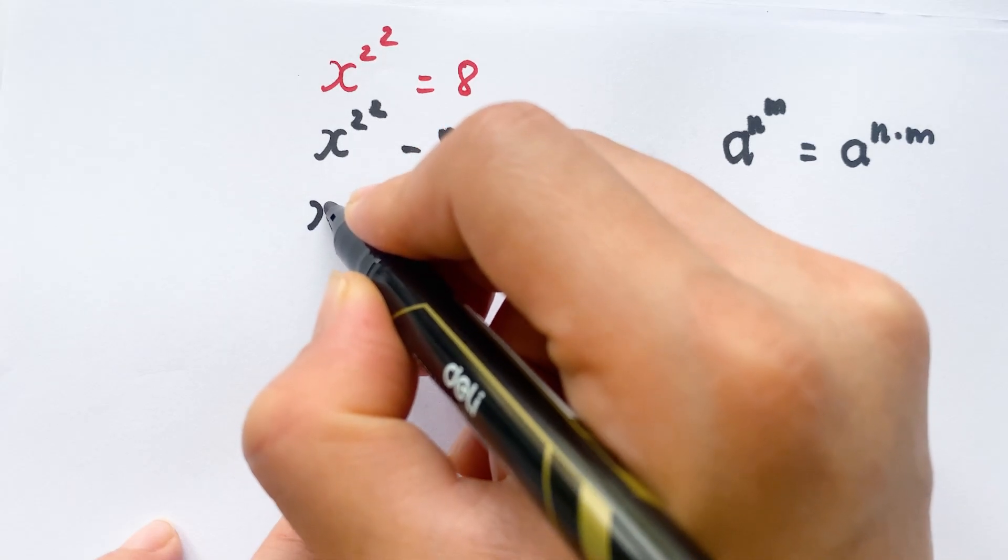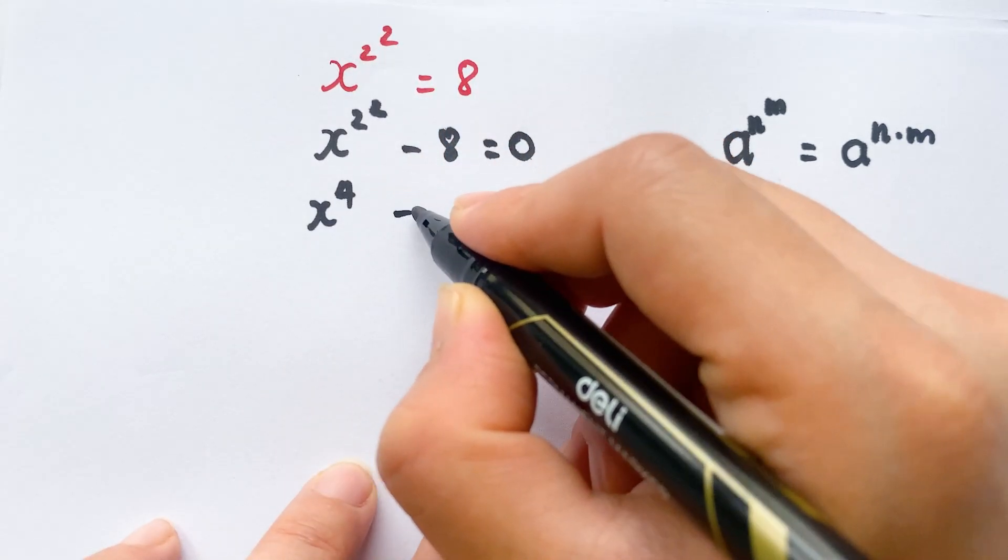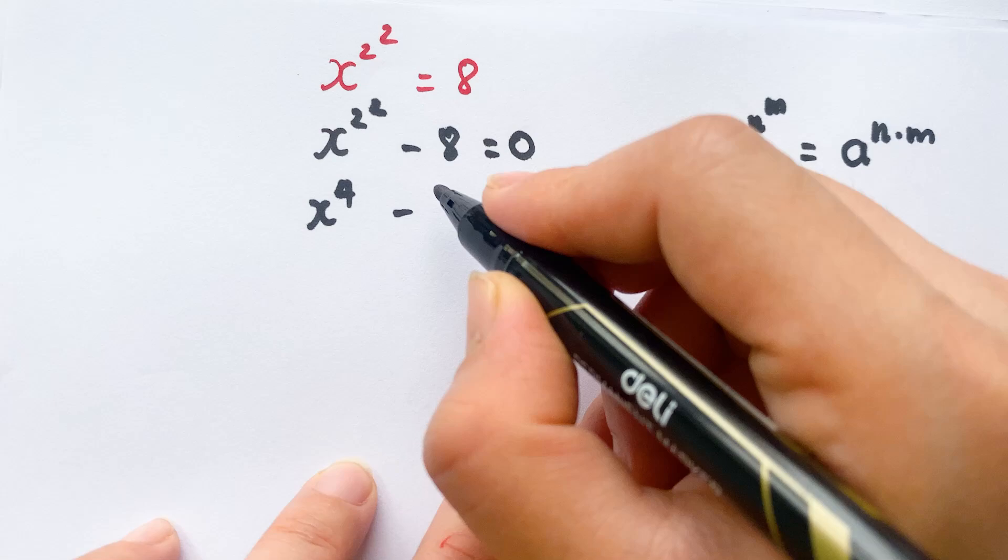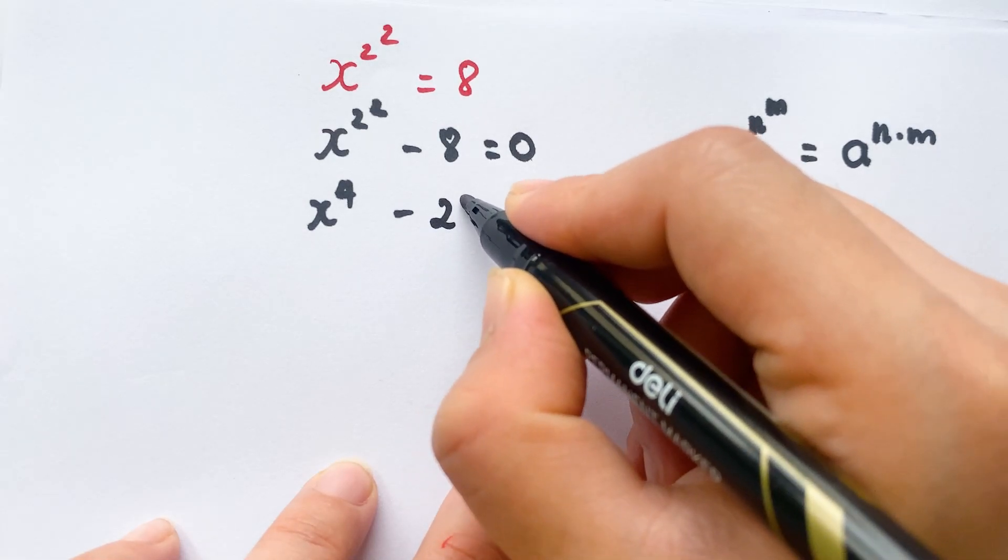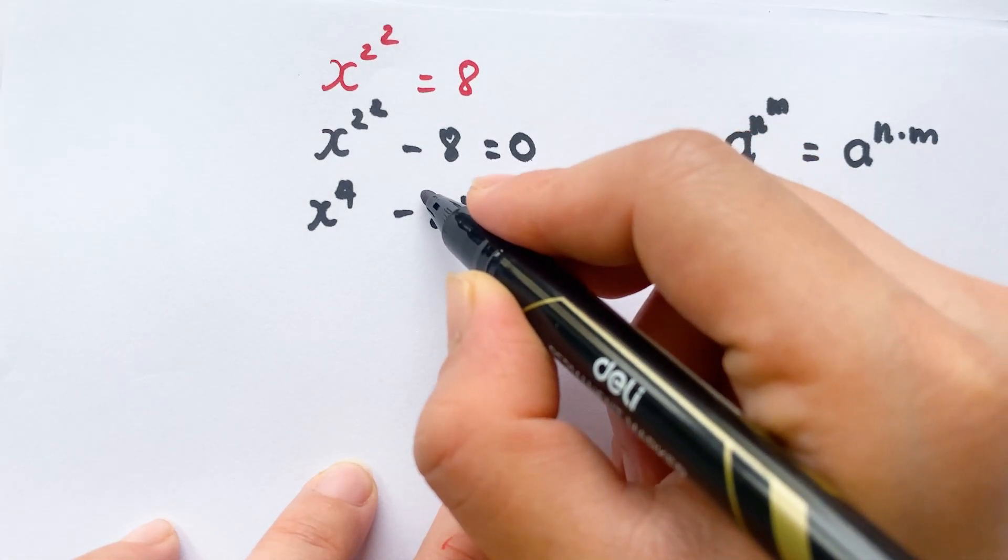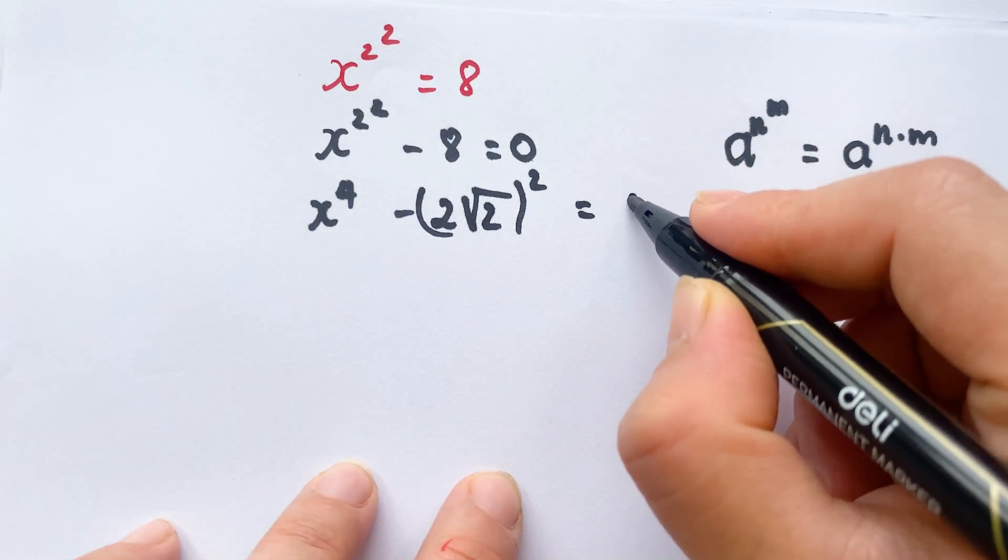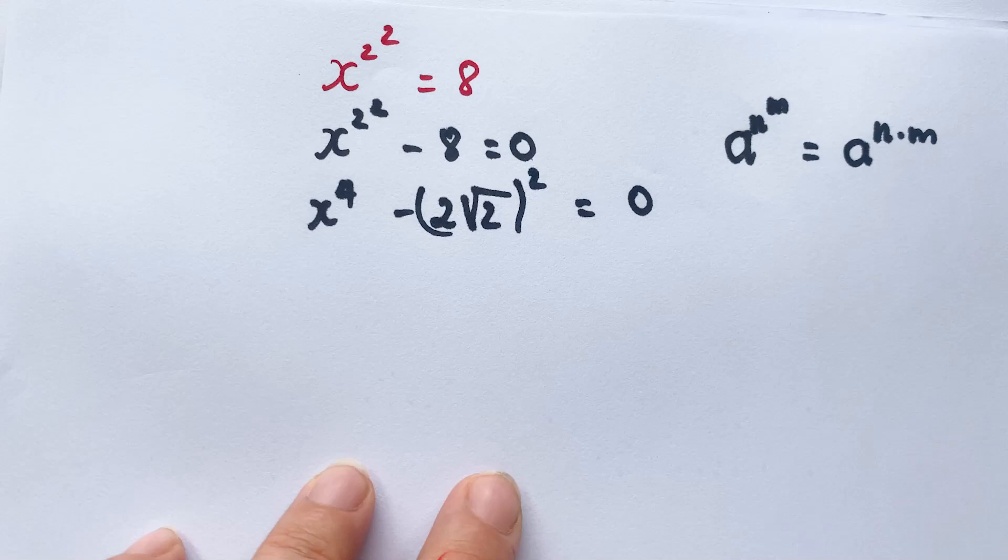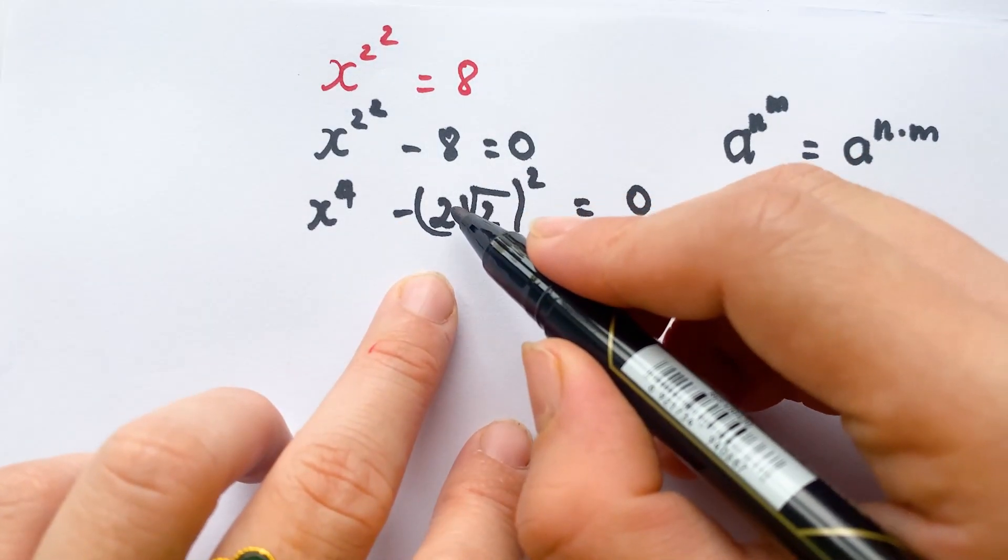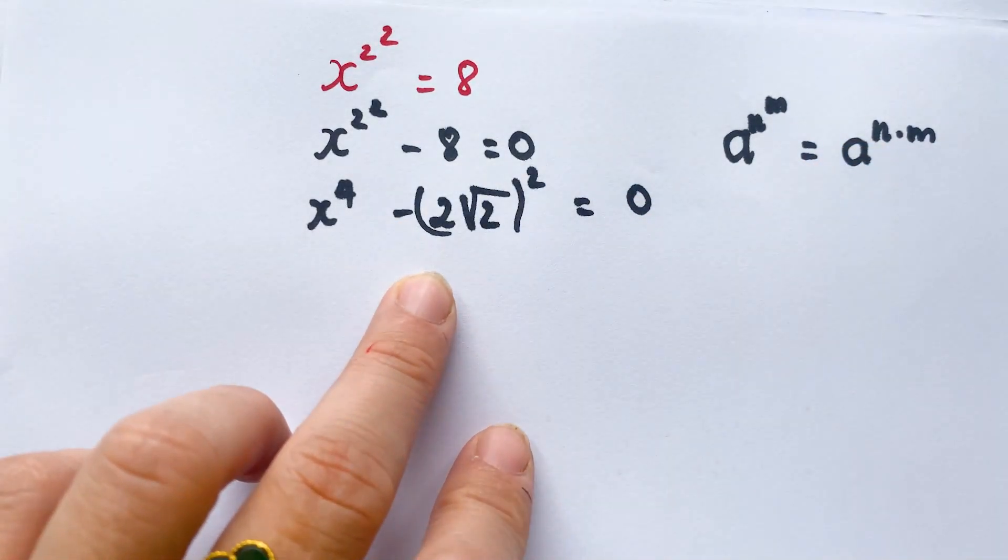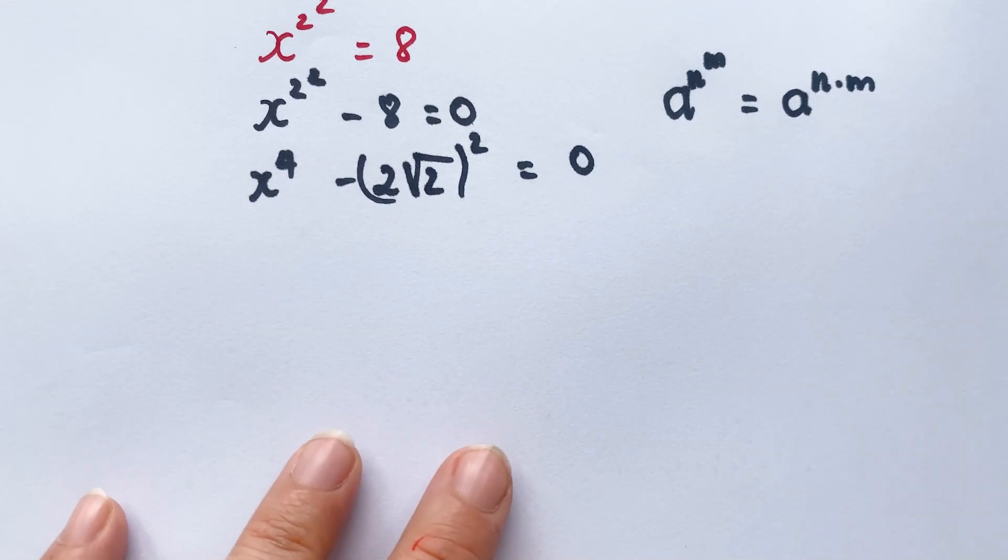Therefore, we can have x^4 - 8 = 0. You can write this as x^4 - (2√2)^2 = 0, because 8 equals (2√2)^2.